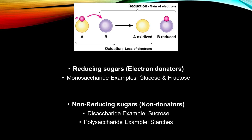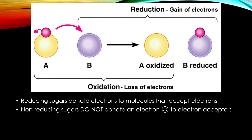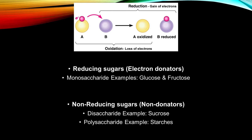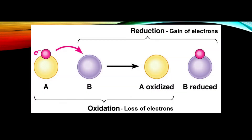Non-reducing sugars do not donate an electron to electron acceptors. Non-reducing sugars are disaccharides such as sucrose and polysaccharides like starches.